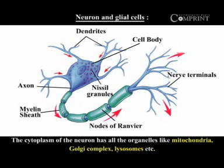The cytoplasm of the neuron has all the organelles like mitochondria, Golgi complex, lysosomes, etc.